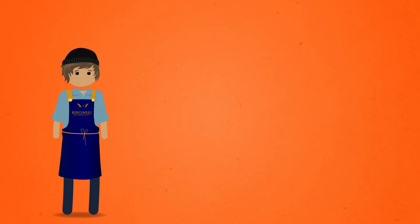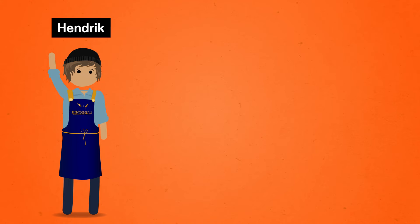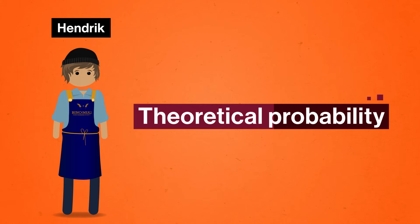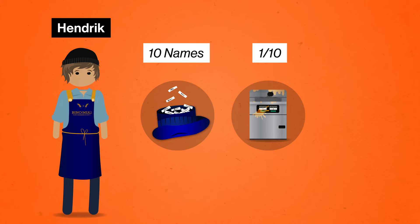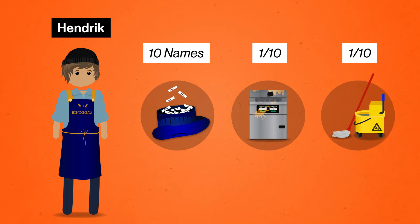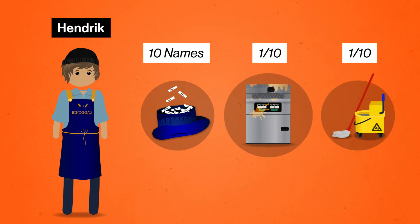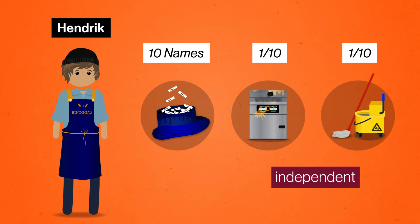Let's focus on a particular waiter called Hendrik. This is a theoretical probability, because we know all the possible outcomes in the sample space and how likely they are. All names go into the same hat the same way, so each has an equal 1 in 10 chance of being picked. After his name has been picked out and replaced back in the hat for the second draw, his chances of being assigned the floors is still 1 in 10. Being picked or not for the fryer doesn't affect his or anyone else's chances of doing the floors — so the two assignments are still independent, even though the same people are involved in both events.